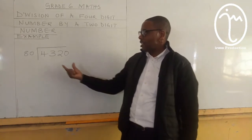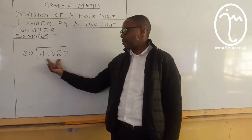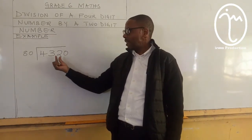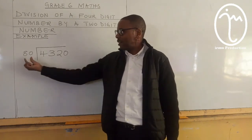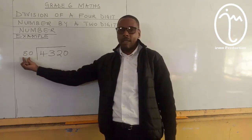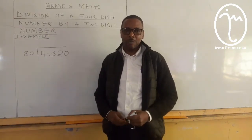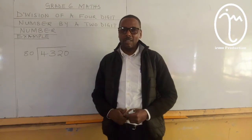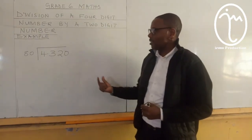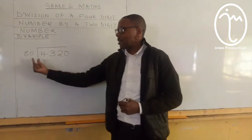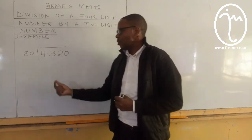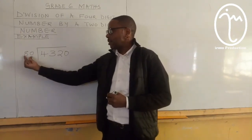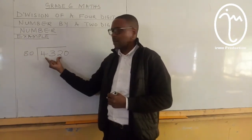I've written an example here: 4,320 divided by 80. It's a simple question. I will show you two methods, and the first method is where you use multiplication. So, this is our divisor. This is our dividend.